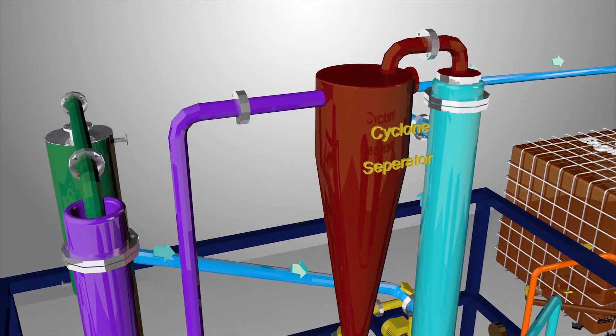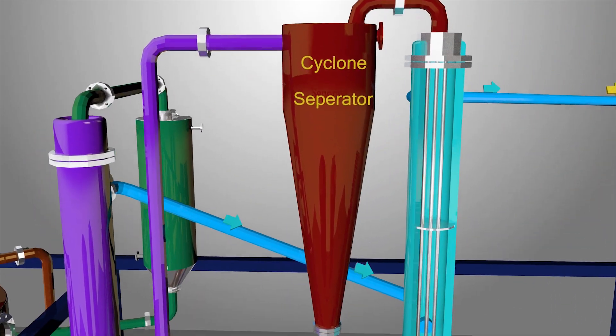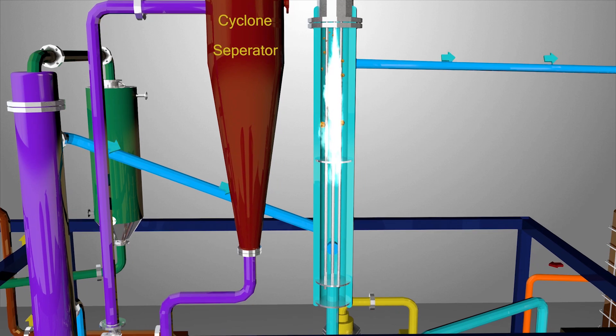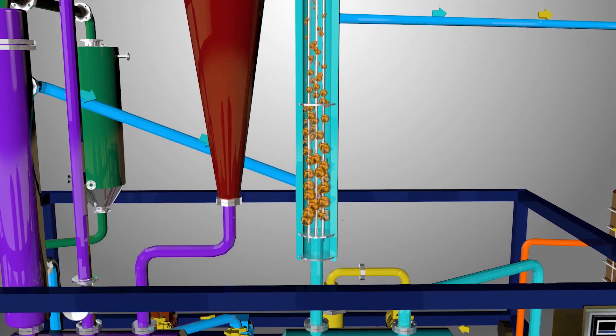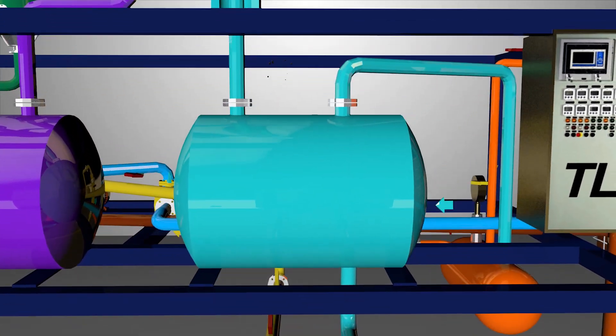Naphtha range oil is pumped through a cyclone separator and are condensed in the naphtha condenser. After condensing, the naphtha range oil is stored in a separate naphtha tank.